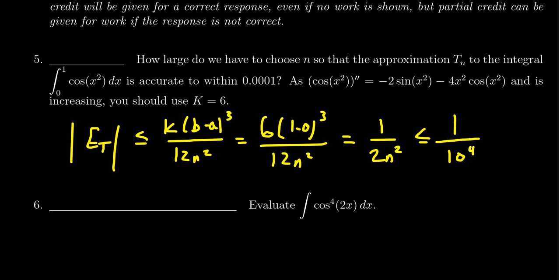If we reciprocate, we need 2n² ≥ 10⁴. Divide both sides by two: n² ≥ 5000. Then take the square root: n ≥ √5000, which is approximately 70 point something.